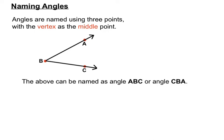There's also a special symbol for an angle so we don't have to write the word 'angle' each time. We can write the angle symbol followed by ABC, or the angle symbol followed by CBA. The important thing to recap: the vertex letter — B in this case — has to go in the middle of the name.